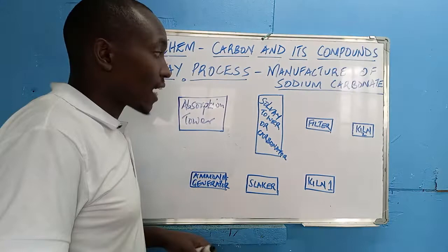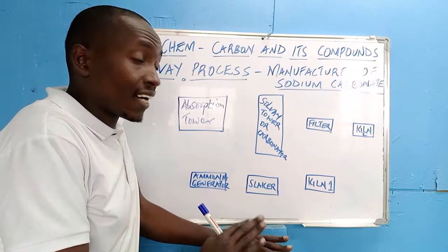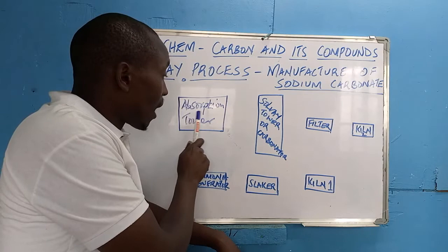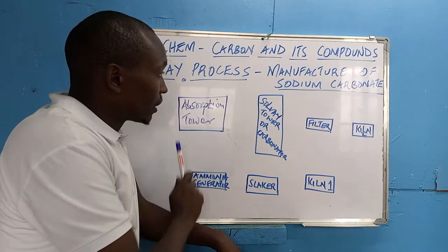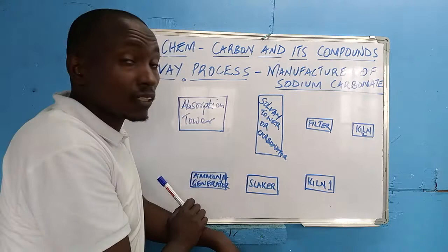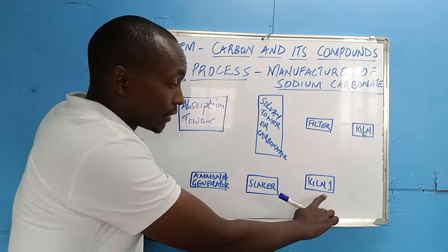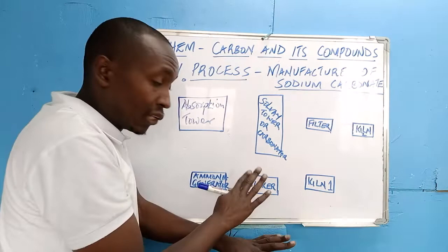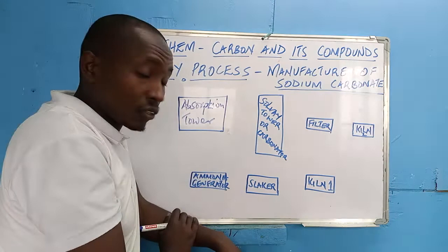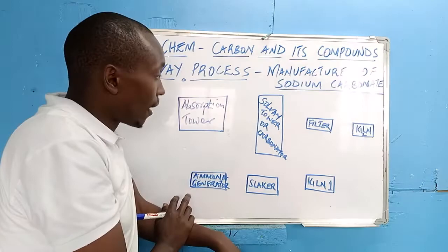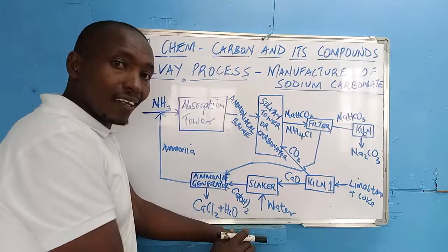There are seven compartments or chambers of interest in the Solvay Process. The first is the absorption tower. There is the Solvay Tower, also called the carbonator. There is a filter, two kilns — kiln number one and kiln number two — a slaker, an ammonia generator, and a simple reaction chamber.